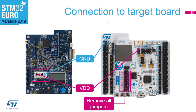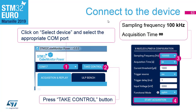Once you've done all this, connect the USB cable to the power shield. The tool can work standalone — if you press the user button on the power shield, the Nucleo will be powered, and since you have the OTA or point-to-point server, you will see it advertising. For the dynamic measurement, open Cube Monitor Power, find the correct virtual COM port, press Take Control, and configure the sampling frequency as high as possible at 100 kilohertz and set acquisition time to infinity.